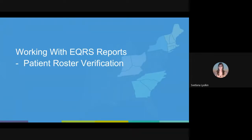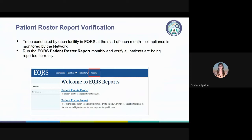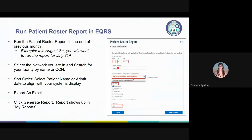Similar to the patient certification that was historically completed each month in CROWNWeb, the network is providing instructions for facilities to review the EQRS patient roster verification each month to identify any discrepancies with patient records. Start by going to the Reports tab to locate the patient roster report. Select the last day of the prior month to include all patients admitted into your facility as of that date. For example, if today is August 2nd, you would enter July 31st.